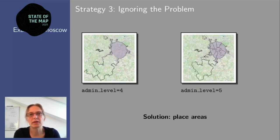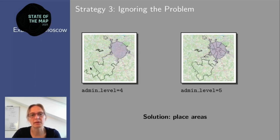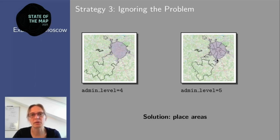The third strategy is for governments to simply ignore traditional structures and do their own thing. The example here is Russia, specifically Moscow. Admin level 4 — the state of Moscow — consists of the city proper plus some countryside in the south. At admin level 5 the parts only cover parts of the city, so there's no complete administrative structure for all of Moscow. The Russian community solved this by mapping place areas — Moscow is now also a multipolygon with place=city — and this works perfectly, fitting between admin level 4 and 5.